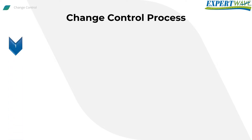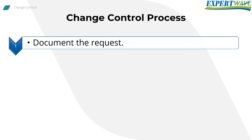Usually the process starts by documenting the request — we ask the customer to write down whatever she wants to change. Many times the customer drops the change just because she doesn't feel like writing it down. They can quickly request a change verbally, but if it requires writing it down, they'll say they'll give it more thought and usually never bring it up again. This is a huge plus for us, as many customers request changes just for the sake of it.